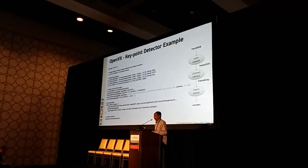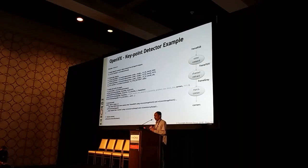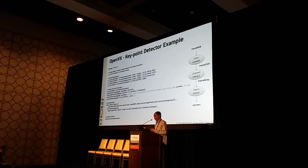Here is another example. This corresponds to the diagram shown before — the first page where you have the RGB camera connected in, which is trying to detect the key points inside the RGB image. This is very similar to the previous example, except let's look at the for loop — the while loop, the execute graph. Before it calls the process graph, it is trying to copy the RGB image into the image object.